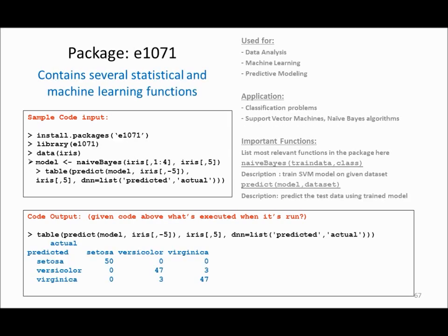e1071 is another package which contains several statistical and machine learning functions. It is used for data analysis, machine learning, and predictive modeling. In this example I am implementing a Naive Bayes classification algorithm and doing prediction on my data.